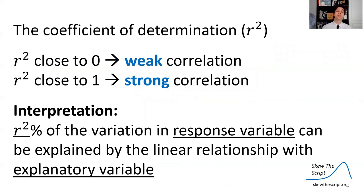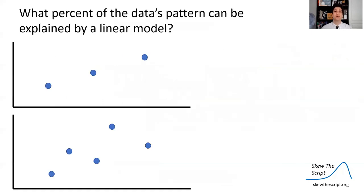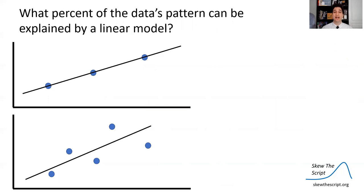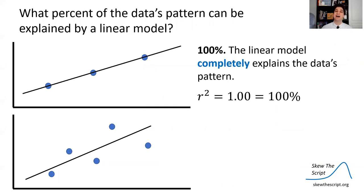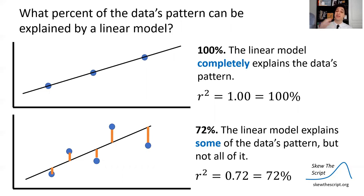R-squared close to 0 indicates a weak correlation; R-squared close to 1 indicates a strong correlation. We can interpret it as a percent: what percent of the data's pattern can be explained by the linear model? In the case of a perfect correlation, 100% of the variation is completely explained by the linear regression model. In the case of a moderate correlation, the R-squared was 72% — the linear model explains some variation but there is still random variability we did not capture.